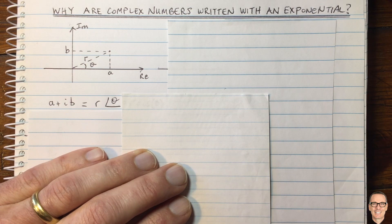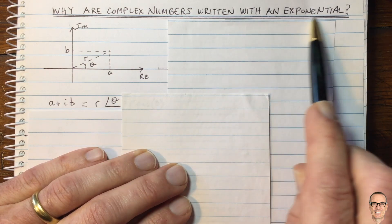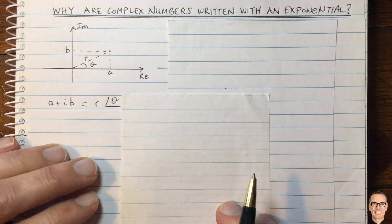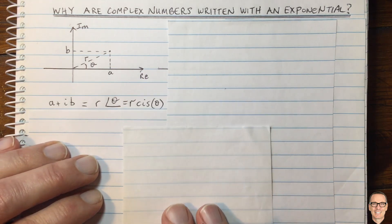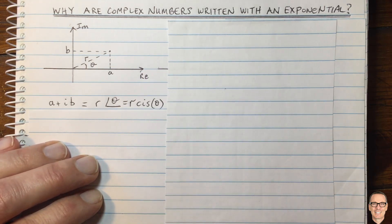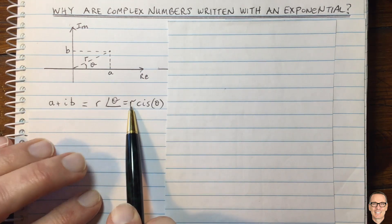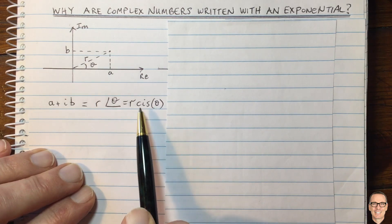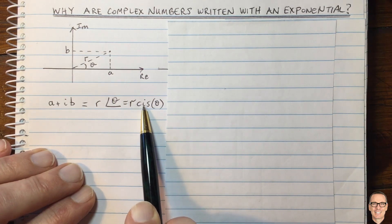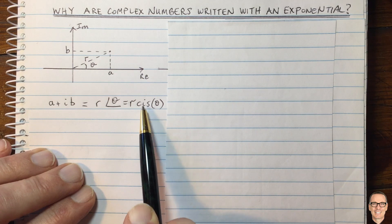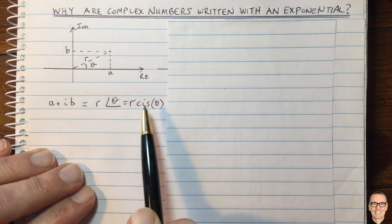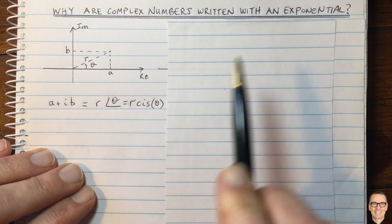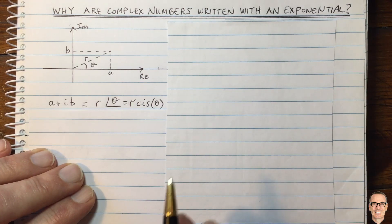There are other ways of writing complex numbers, one of which includes an exponential. Let's try to understand that way, because it's often confusing. First, here's a third way of writing it: with the amplitude and CIS, which stands for cosine plus i times sine — and this one is going to help us understand the exponential version.